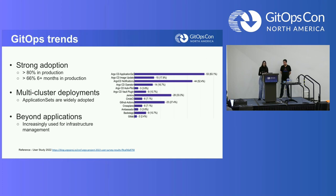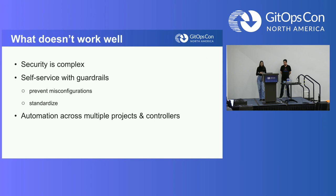GitOps is going beyond applications and is increasingly being used for infrastructure management as well. What doesn't work well: security in Kubernetes itself is very complex, and becomes even harder with complex workflows like multi-cluster deployments. Self-service with guardrails is not really cohesive. We want a model with guardrails that helps prevent misconfigurations, standardize workflows, and improve automation across multiple projects and controllers.